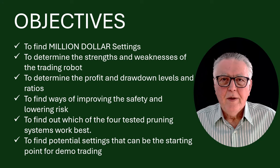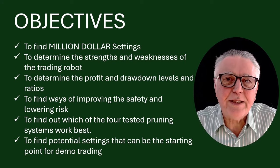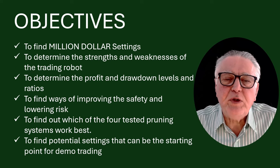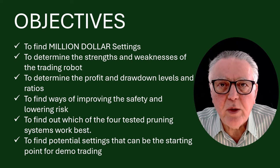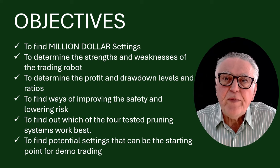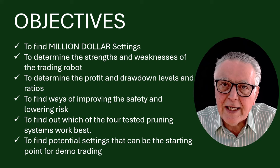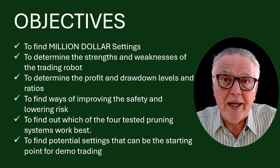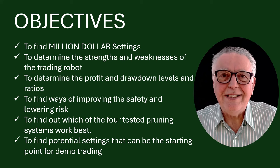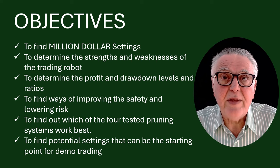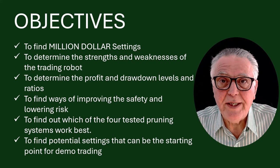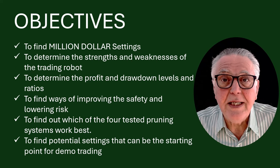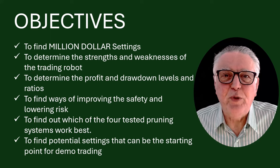The objectives for today: obviously, as promised, to find million dollar settings for the Bell Trader. It's also important to determine the strengths and weaknesses of the Bell Trader, where the dangers are, to determine profit and drawdown ratios because they give you an indication of risk, and then we're going to go into ways of improving the results, making them safer and more robust. Then we'll test the refinement settings built into the Bell Trader.